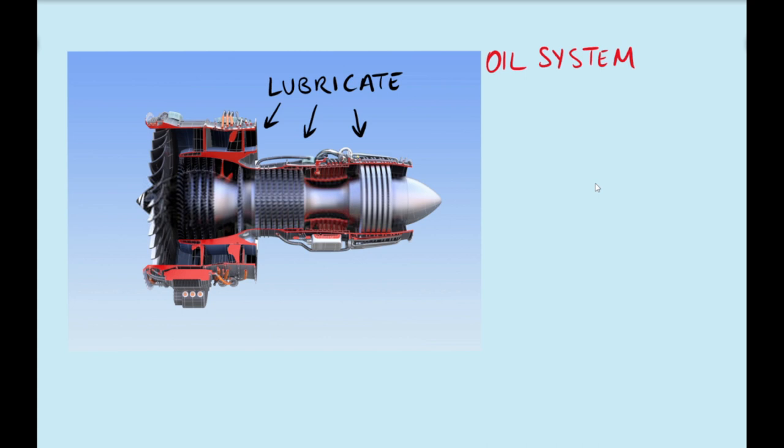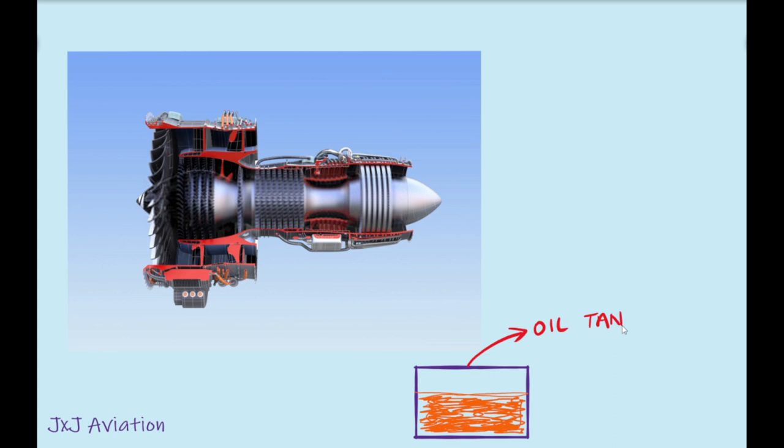This system consists of an oil tank where the oil is stored. The oil is pressurized using an oil pump before it is distributed to different parts of the engine.